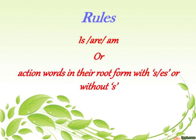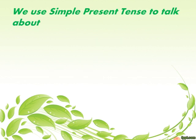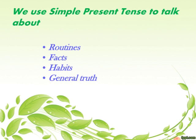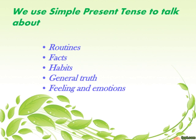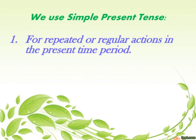You have to remember this rule: in simple present tense, sentences will have either is, are, am, or an action word in their root form with s, es, or without s. We use simple present tense to talk about daily routines, facts or scientific facts, habits, general truth, and feelings and emotions.